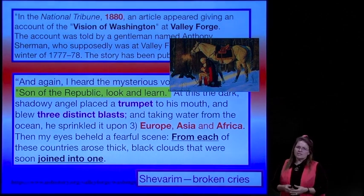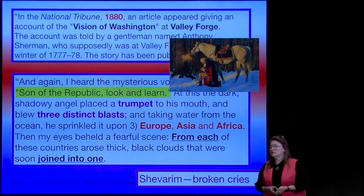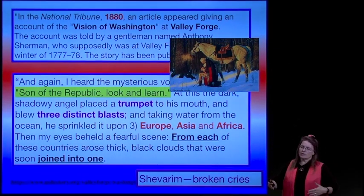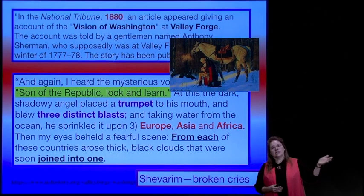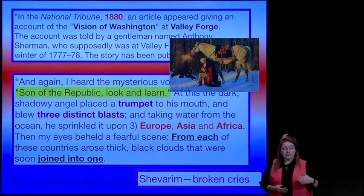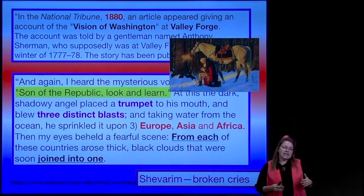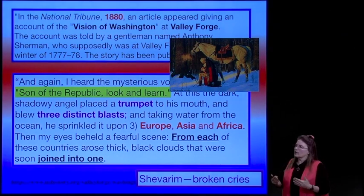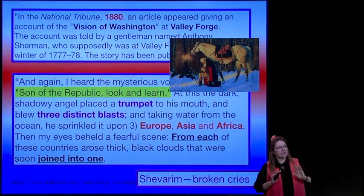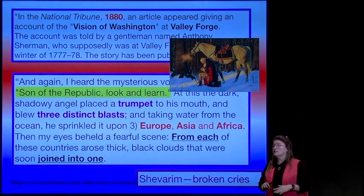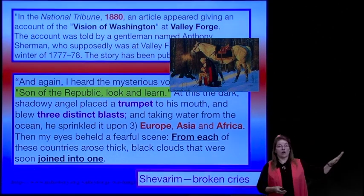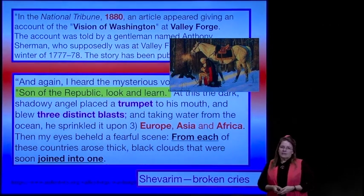Because he's already seen in the vision—for lack of time I've only put in the last stage. The first time the angel told him to look and learn, it was the Revolutionary War. The second time was our Civil War in the 1860s. The angel is prophesying the wars that will be on this land, on this soil. So this one we're about to read is the one that hasn't been fulfilled yet. 'Son of the Republic, look and learn.'